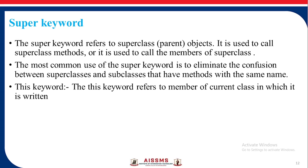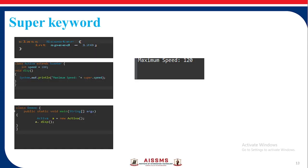The `this` keyword refers to the member of the current class in which it is written. Consider this example: class `Scooter` has a variable `speed` with value 120. Class `Activa` extends `Scooter` and has speed value 180. A display method shows the maximum speed using `super.speed`. When we create an object of Activa and call `A.test`, the method in the Activa class is executed and `super.speed` refers to the parent class `Scooter`, so it displays the maximum speed as 120.